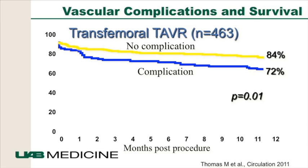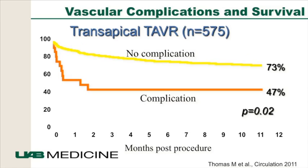The problem with vascular complications is that if you do have a major vascular complication, there's a drop in survival. A study in Circulation looked at almost 500 patients undergoing transfemoral TAVR: 84% of patients were alive at one year with no complication compared to 72% with a major vascular complication. Similarly, with transapical TAVR, if you had no complication you did better than if you had one — it's associated with reduced survival in both approaches.